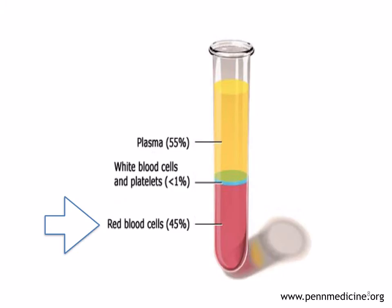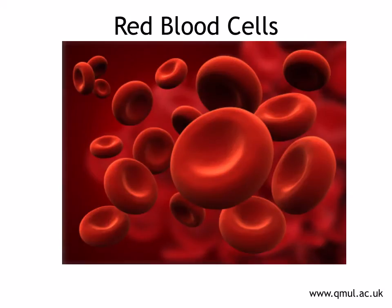Let's move on to red blood cells. They make up about 45% of the blood. You've got about 5 million red blood cells in 1 cubic millimeter of blood. They only live for a few months, so they're removed by the liver and constantly replaced by the bone marrow. What do you notice about the shape of these red blood cells? They've got a biconcave shape, so they've got a dip in the middle, and this is one of the adaptations for transporting oxygen.